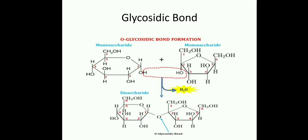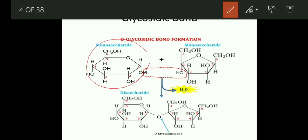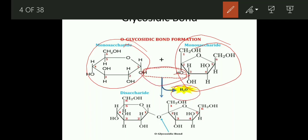The third point we will discuss here is the glycosidic bond. Students, always remember that the glycosidic bond is formed between two monosaccharide units. The glycosidic bond forms between two monosaccharide units when water — H2O — is removed. After removal of H2O, the bond formed between the two monosaccharide units is the O-glycosidic bond. Clear?